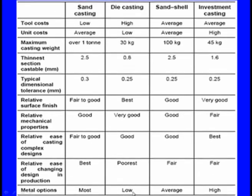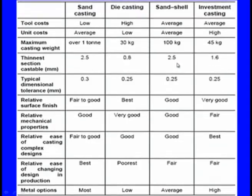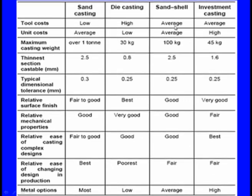For sand shell molding — the chemical sand casting or shell molding process: tool costs are average, unit costs are average, maximum casting weight is 100 kg, thinnest section possible is 2.5 mm, typical dimensional tolerance is 0.25 mm. Relative surface finish is good, relative mechanical properties are good, relative ease of casting complex designs is good, relative ease of changing design is fair. Metal options are average — not all alloys can be manufactured; an average number of alloys can be made using shell molding.